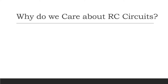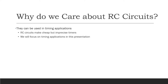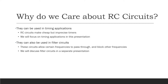RC circuits have two main uses. First, they can be used in timing applications. RC circuits are nice for timing because they are inexpensive. Unfortunately, they are imprecise because their timing can vary based on fluctuations in temperature and other factors. We're going to focus on the timing of RC circuits in this presentation. RC circuits can also be used in filters because they allow certain frequencies to pass through but block out other frequencies. We'll talk about filter circuits in a separate presentation.